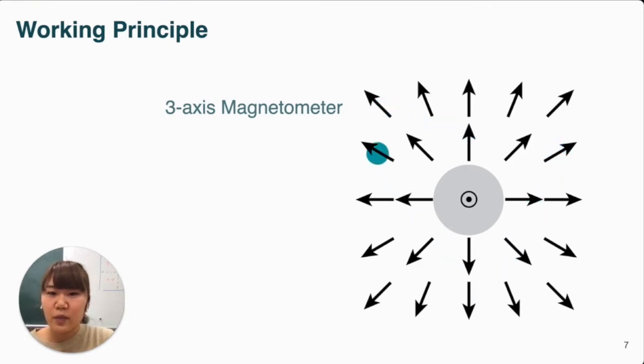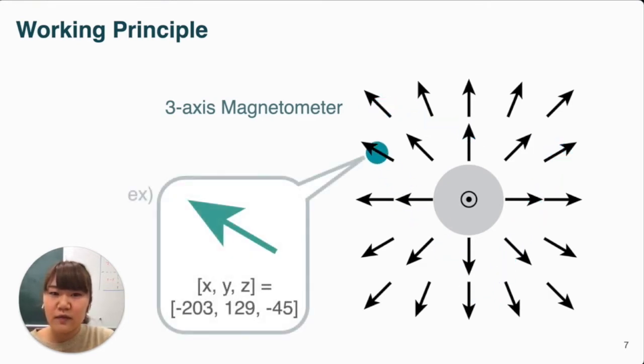For example, suppose we get this vector value from the measurement. Basically, if we find the closest vector to this value from the pre-recorded data, we can determine the position of that vector as the current sensor position.